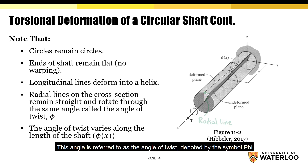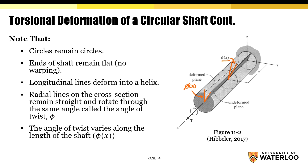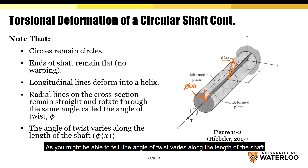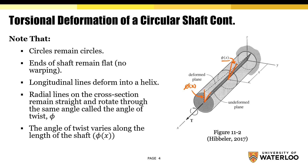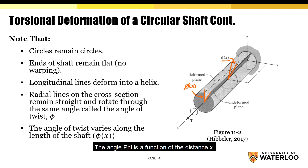This angle is referred to as the angle of twist, denoted by the symbol phi (φ). The angle of twist varies along the length of the shaft — in other words, the angle φ is a function of the distance x.